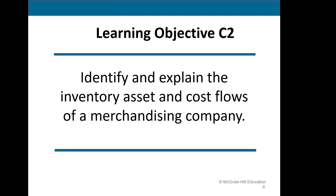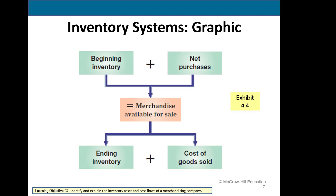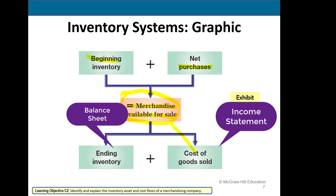We will look at inventory now and cost flows. This is a very important graphic — you can also print this from the full PowerPoint. Our beginning inventory plus our purchases equals merchandise available for sale. Of the merchandise available, we've either sold it, where it becomes cost of goods sold on the income statement as an expense, or we still have it left in ending inventory, which goes on the balance sheet as an asset.